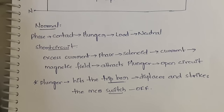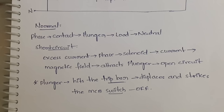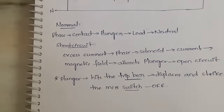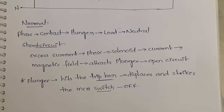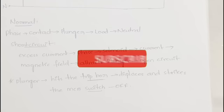In the next video I'll explain ELCB, which is also simple, and then MCCB. If you understand MCB, all the others will become simple too. The main concept is: make the circuit open and turn off the switch — that's all. Thanks for watching till the end. See you in the next video. Bye bye.